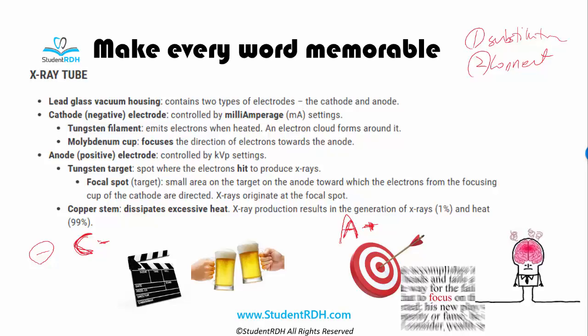In the negative electrode there's something called the tungsten filament. Now I'm not going to talk about what it does, but if you look at this word 'filament' — can you substitute it with 'film'? So if you are a C minus student, you know there's a lot of work to do. You might be getting the C because you're watching way too many movies or films and not studying enough. So in C — cathode — you have the film, the filament.